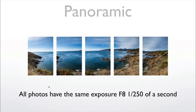For panoramics, all photos need the same exposure because you'll merge them together. I went into manual mode, dialed in F8 for a big depth of field, and determined that 1/250 of a second was fast enough. How? I started in AV mode at F8, pressed the shutter, took a photo, and saw the speed was 1/250. Then I switched to manual, dialed in F8 and 1/250, and took five photos — all with the same exposure.